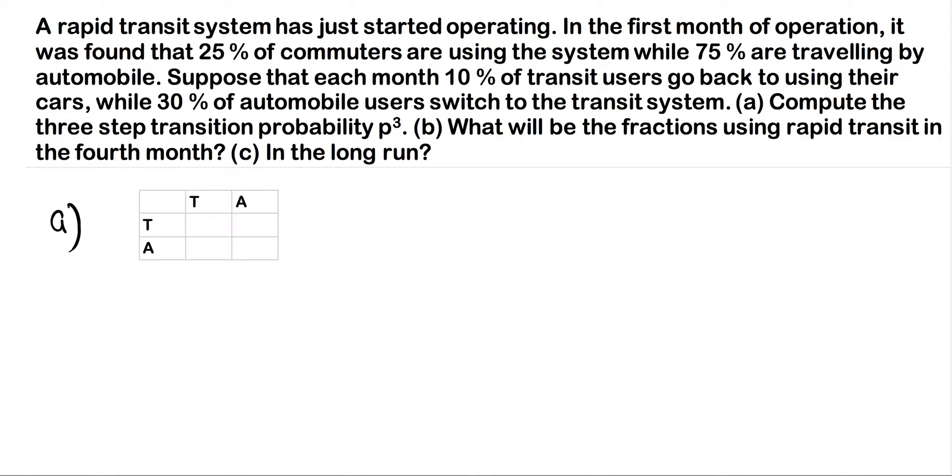A rapid transit system has just started operating. In the first month of operation, it was found that 25% of commuters are using the system while 75% are traveling by automobile. Suppose that each month, 10% of the transit users go back to using their cars while 30% of automobile users switch to the transit system. Part A: compute the three-step transition probability P³. So we'll start there and then move on to parts B and C. Part A is a good starting place for this problem.